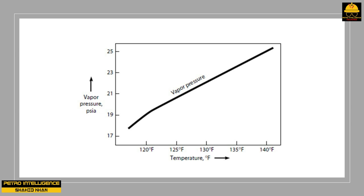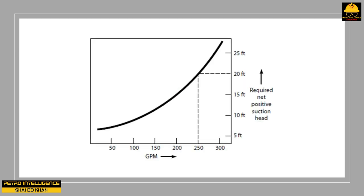Since the specific gravity of the liquid is 0.58, reducing vapor pressure by 2 psi is equivalent to an increase in available NPSH of 8 feet. Our objective is to increase the flow from 250 to 300 GPM; the required NPSH increases from 20 to 26 feet. When we sub-cool the liquid by 5°F, the available NPSH increases from 20 to 28 feet. Since available NPSH now exceeds required NPSH by 2 feet, the flow can be increased without risk of pump cavitation.